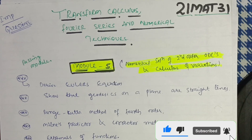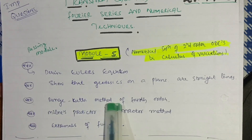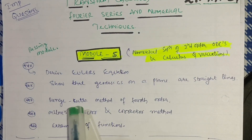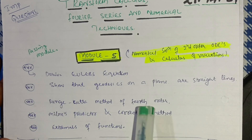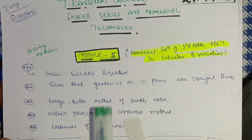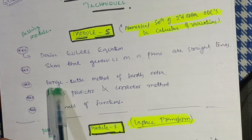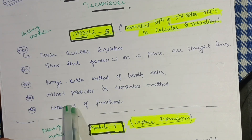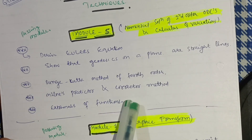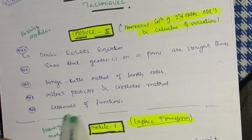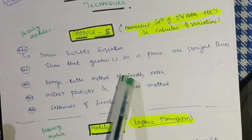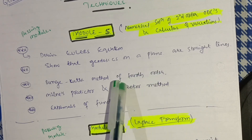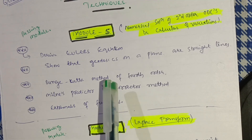Next is the Runge-Kutta method of fourth order — problems will come on this method, which is the most important one. Do three to four problems from this method. Also, Milne's predictor and corrector method — questions will definitely be on these two methods as per the syllabus. If you are good in integration, also focus on beta and gamma functions to score 20 marks in this module. This much content is enough for Module 5 — cover these four or five topics to get 20 marks.